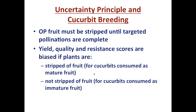One of the challenges in cucurbit breeding — I refer to it as the uncertainty principle with squash — is getting controlled pollinations. There will be lots of open-pollinated fruit from female flowers that open and get pollinated over the weekend or at times when we can't get to them or don't have the right male flower available. The issue is that by leaving these open-pollinated fruit on, we bias our ability to get a good idea of yield, quality, or disease resistance scores for the plant.